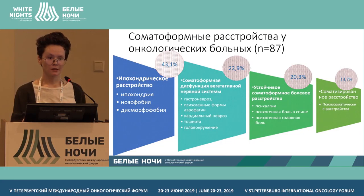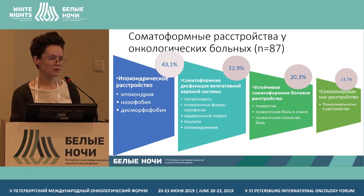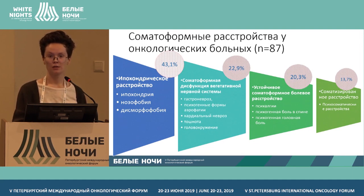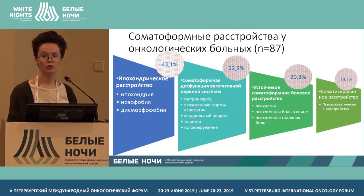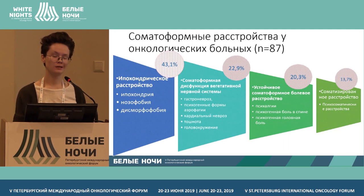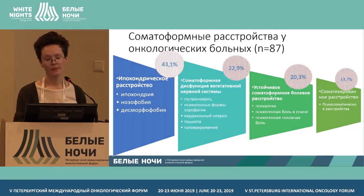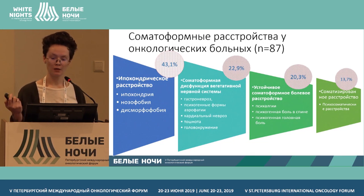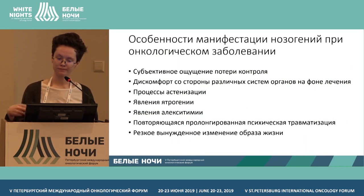The second most common somatic disorder is dysfunction of the vegetative nervous system, when the patient starts to complain about nausea and dizziness but medical clinical tests do not support their view. The third place in terms of common somatic disorders is pain disorder, when the patient has been receiving chemotherapy for more than two years and develops this type of symptoms. The least common ones will not be discussed today.